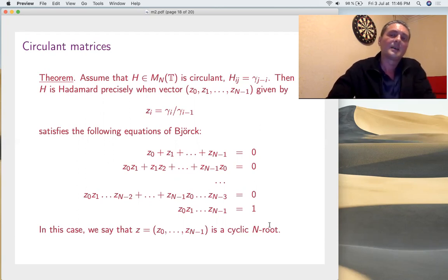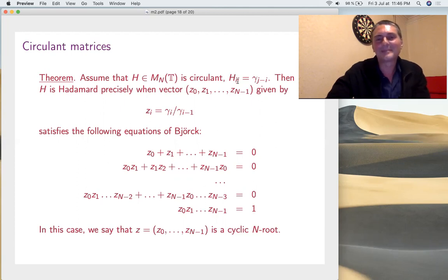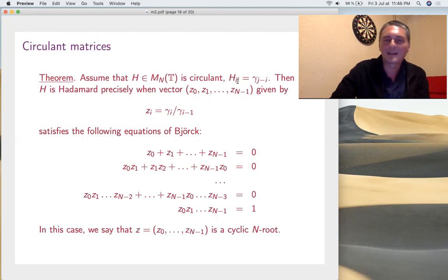What's the idea? Well, it's quite tricky. You have to use this, every time that you do something with circulants, you have to use this trick of Björck. I think that H is circulant and gamma is the first row vector, and then you just divide gamma_i by gamma_{i-1}, we call this z_i, and this z_i satisfies relations which are simpler than those giving Hadamard. So, these are the relations. It's very good. It's a so-called cyclic root.